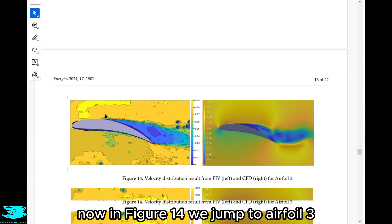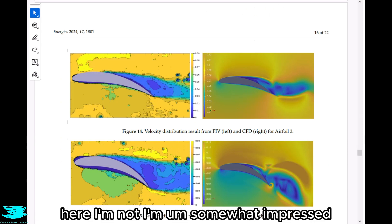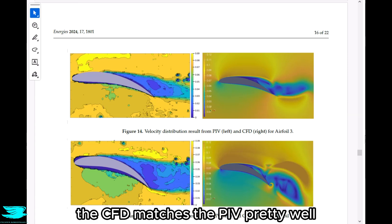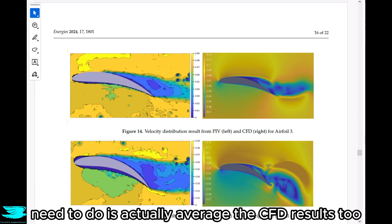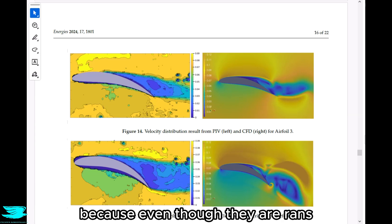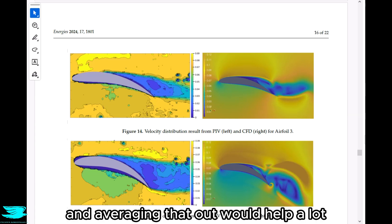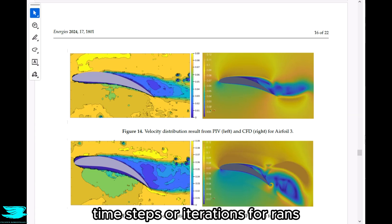Now, in figure 14, we jump to airfoil 3, which is the equivalent of 13 degrees. Here, I'm somewhat impressed because while we do still get quite a bit of flow separation, it's not as bad as I thought it would be. The CFD matches the PIV pretty well. The PIV averages give much better averages than the CFD, I think. What the authors need to do is actually average the CFD results too, because even though it's RANS, the unsteadiness does bleed through a little bit, and averaging that out would help a lot.